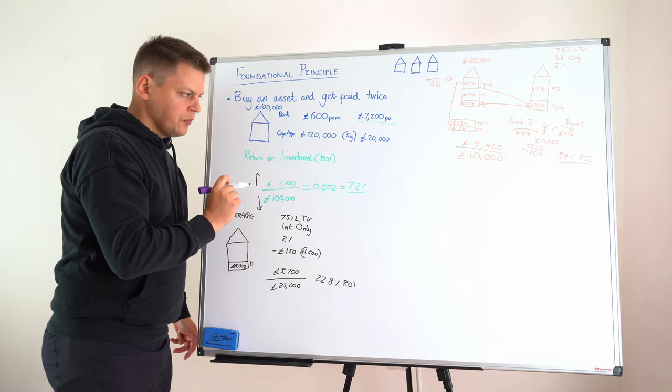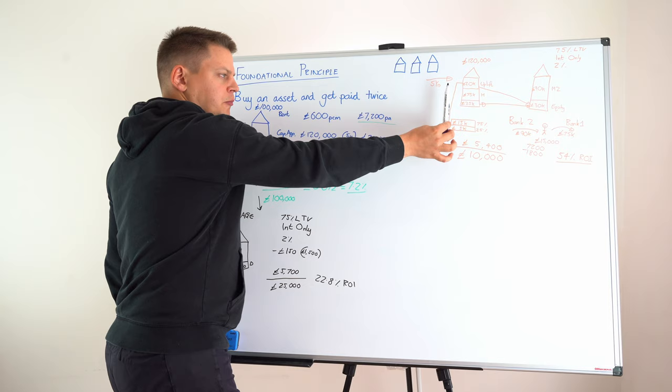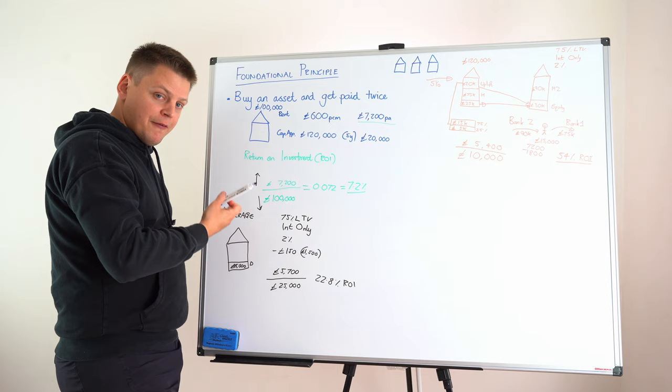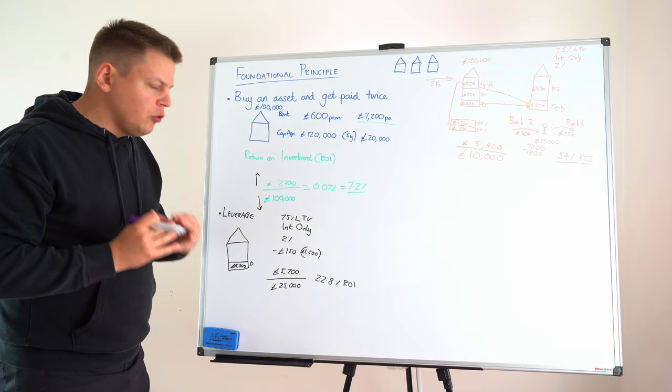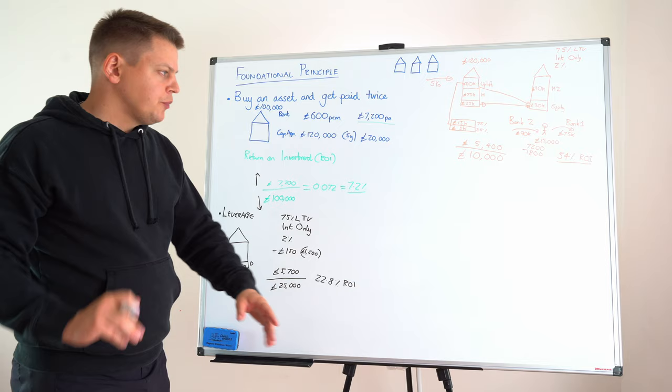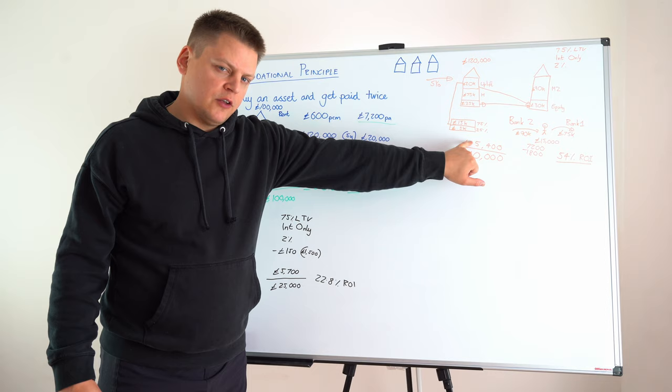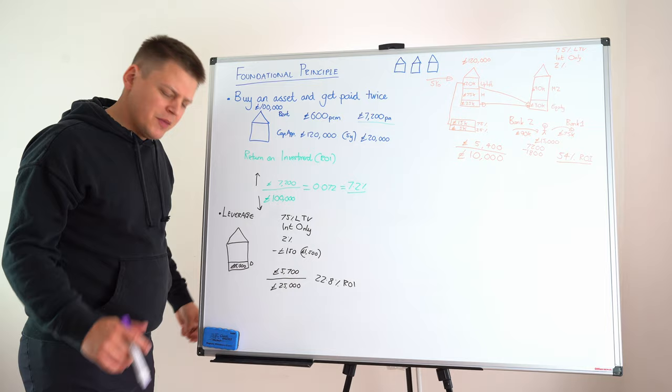We got to the point in the previous video where we said if we purchased a hundred thousand pound house and waited five years, we could apply the principle of leverage again. We could refinance and get some of the original money that we put into the deal five years previously back out, which meant we left ten thousand pounds in the deal. We had a return of five thousand four hundred pounds and a return on investment of fifty-four percent. But the problem we got to was we had to wait five years. The question is, can we do it any quicker?